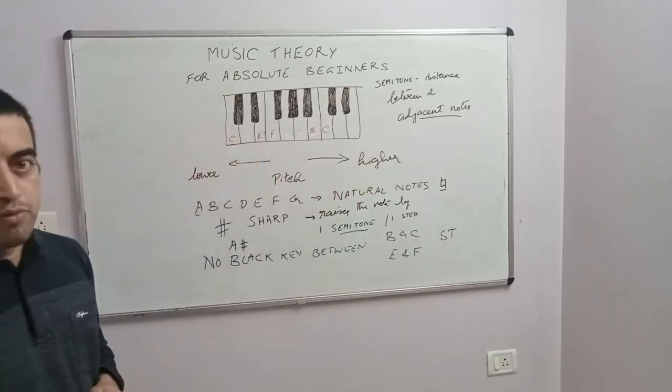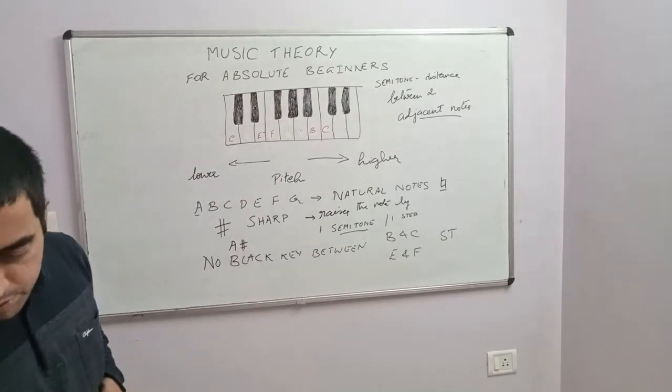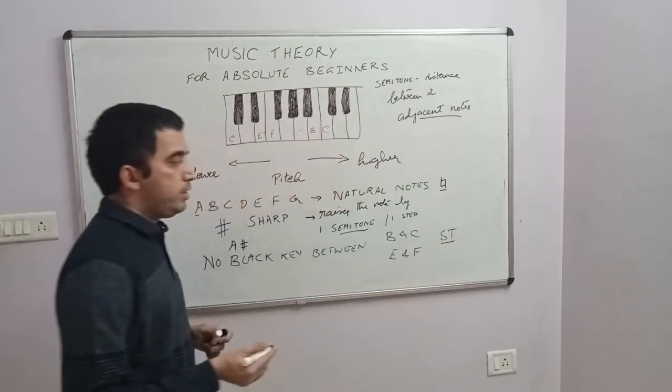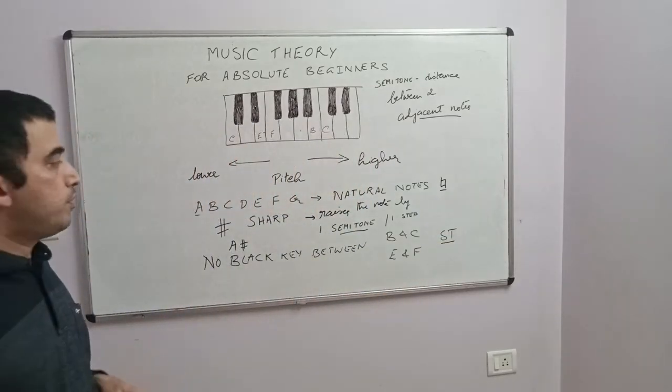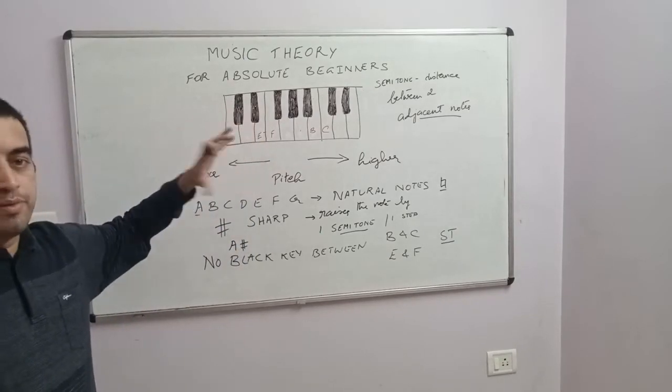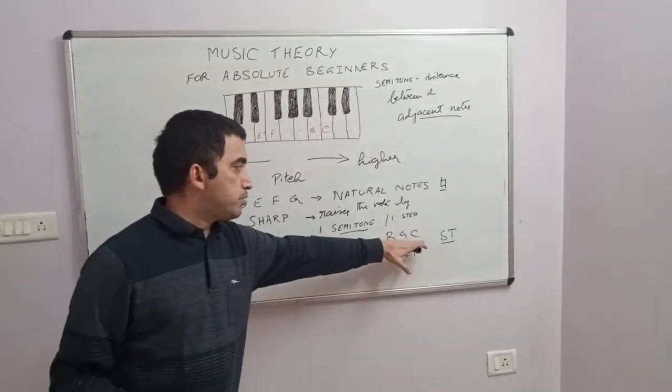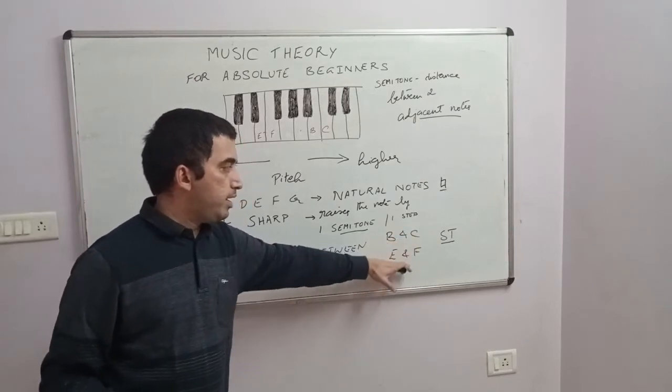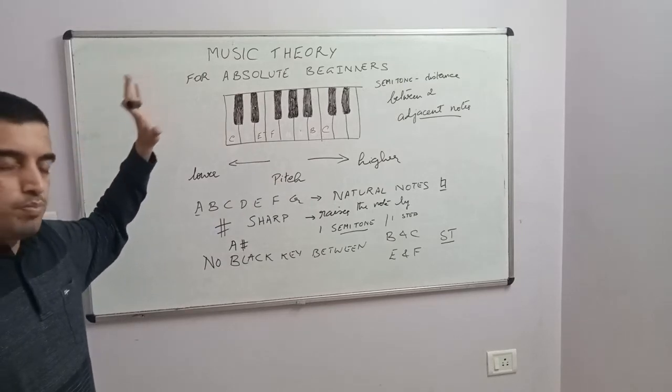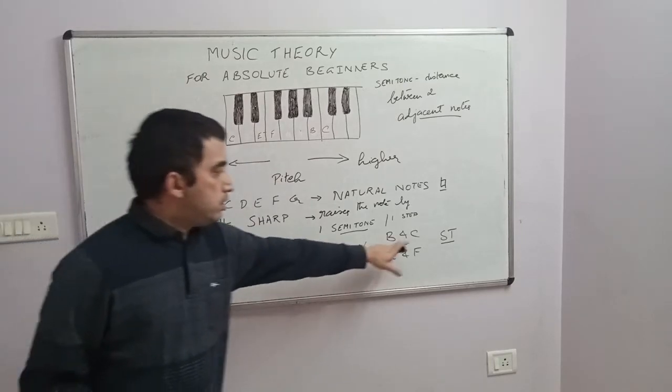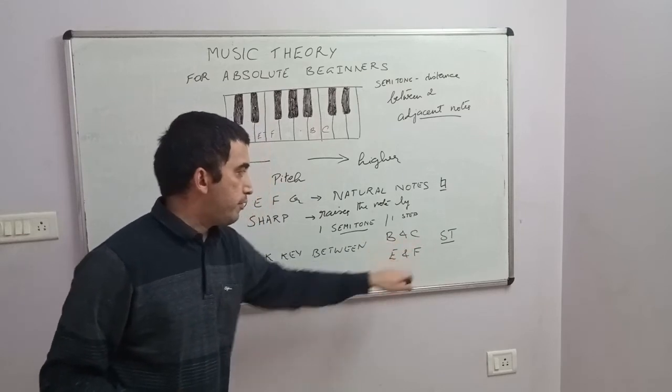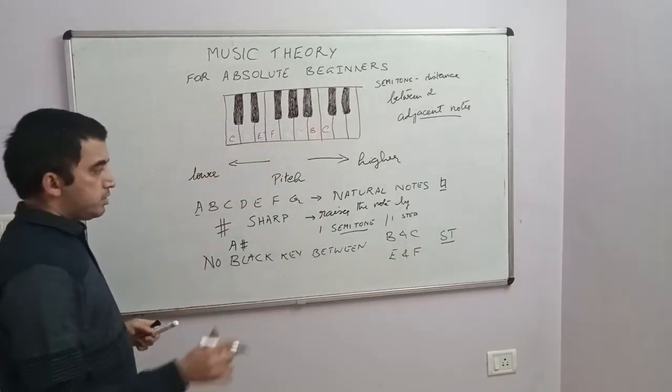Some short forms you should be familiar with: ST in music is commonly used for semitone. Even if you forget the chart of the keyboard, if you just remember that there is no black key between B and C and E and F, that helps you chart out the keyboard pattern in your head. The semitone distance is between B and C and E and F.